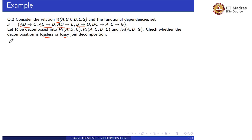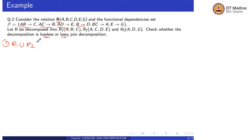We need to check our three conditions. Since there are three decompositions, we check R1 union R2 union R3.